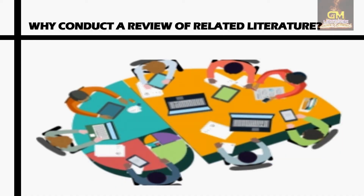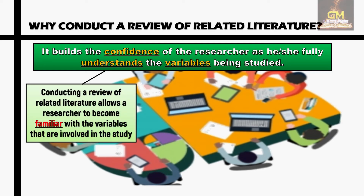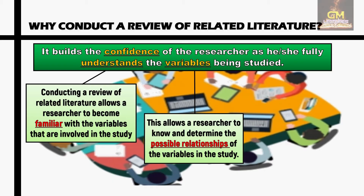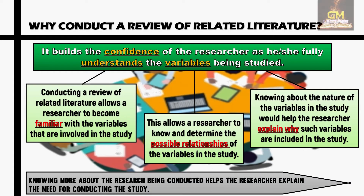Conducting a review of related literature allows a researcher to become familiar with the variables that are involved in the study. This allows a researcher to know and determine the possible relationships of the variables in the study. Knowing about the nature of the variables would help the researcher explain why such variables are included in the study. In other words, knowing more about the research being conducted helps the researcher explain the need for conducting the study itself.